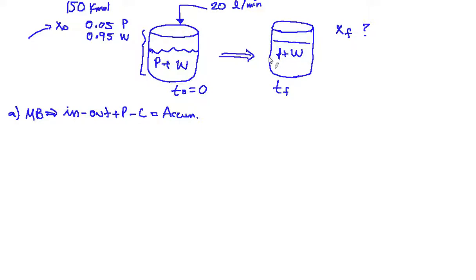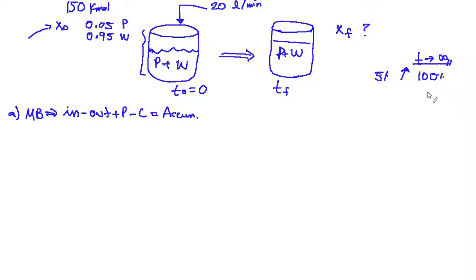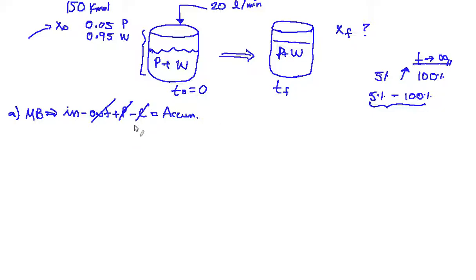Eventually you're going to get more phosphoric acid and concentrate it. So from maybe 5% mole fraction, you're going to increase it — as time reaches infinity you'd achieve around 100%. But of course we're not going to do that. The mass balance simplifies nicely: we have no outlets, only inlet which is the 20 liters per minute; no production and no consumption because we have no reactions; and yes, we have accumulation.